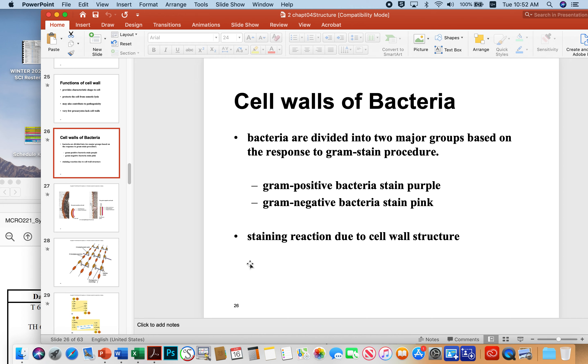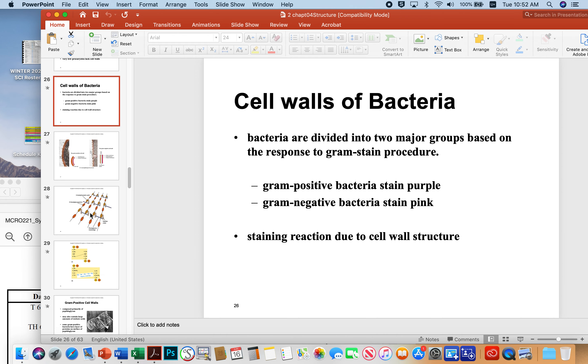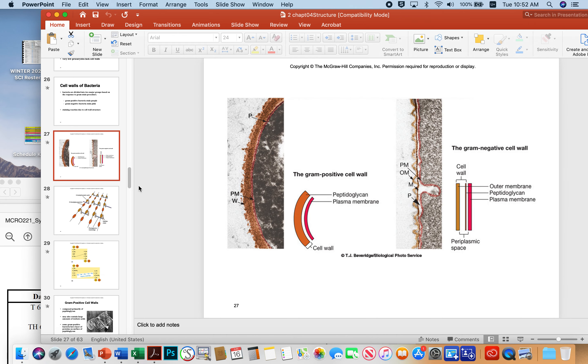The walls of bacteria can be divided into two groups based on the gram stain procedure, which you'll learn a little bit about in the lab section of the class. So gram-positive bacteria stain purple and gram-negative bacteria stain pink using the gram stain technique. The staining reaction is due to the wall structure, and this picture sort of illustrates that point.